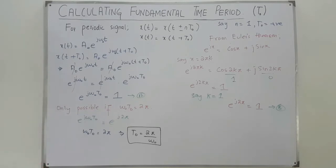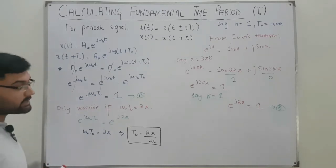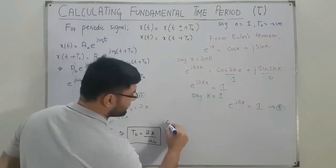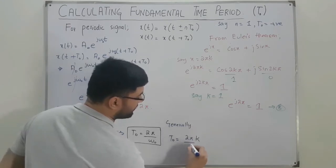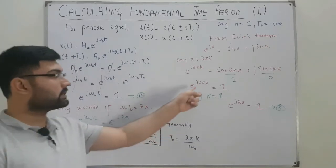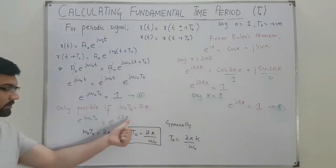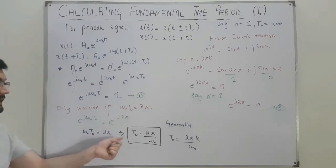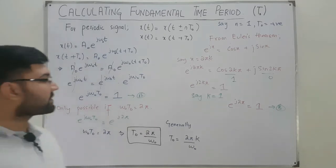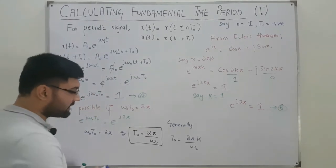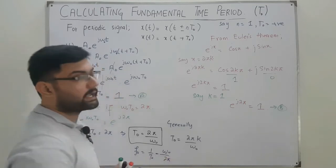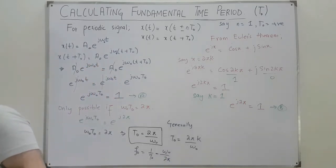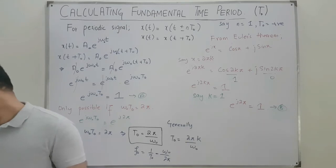For the fundamental period with general k, the formula becomes T₀ = 2πk / ω₀, because comparing exponents gives ω₀T₀ = 2πk. Similarly, the fundamental frequency f₀ = 1/T₀ = ω₀ / (2π).